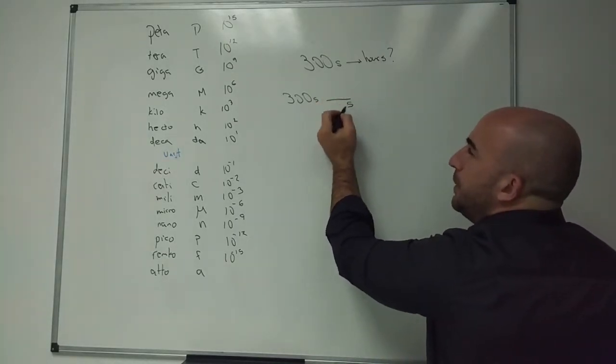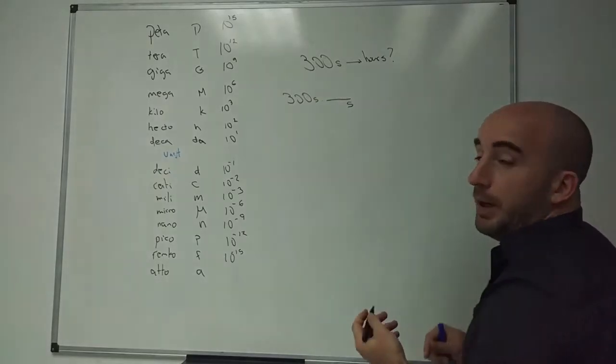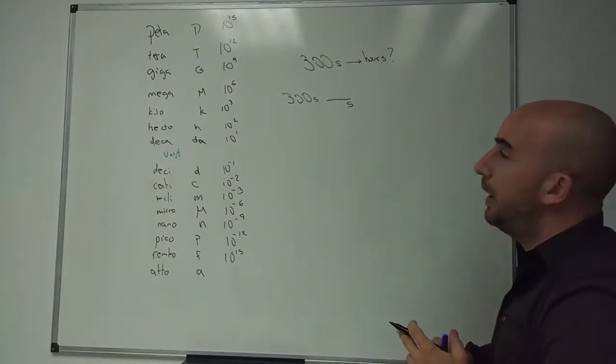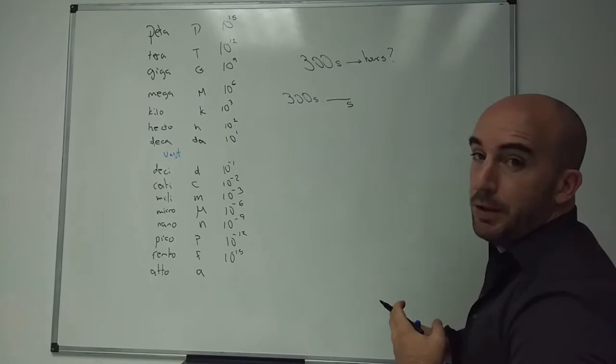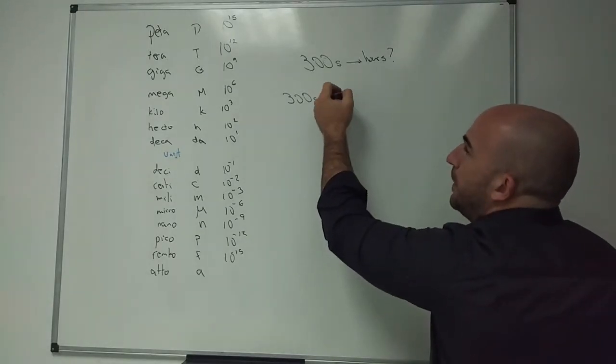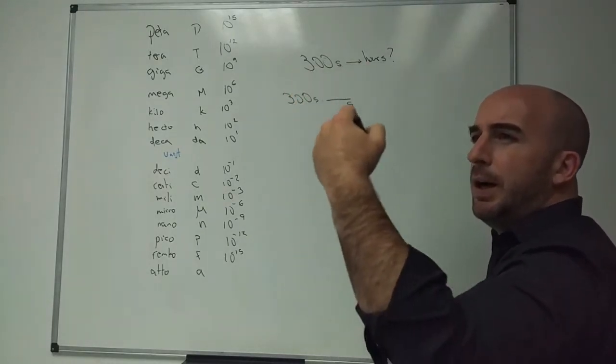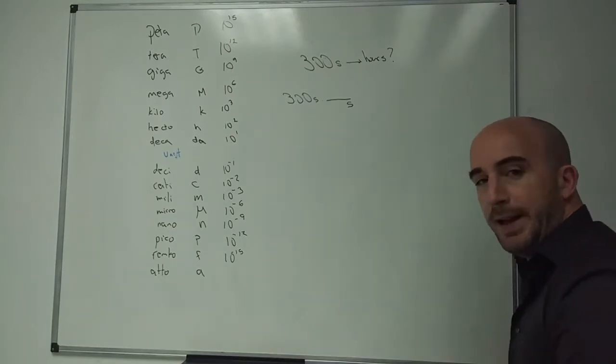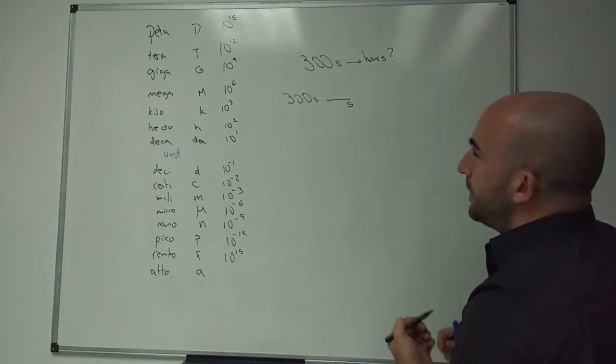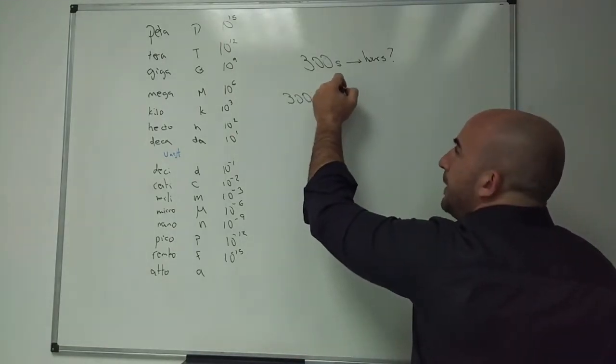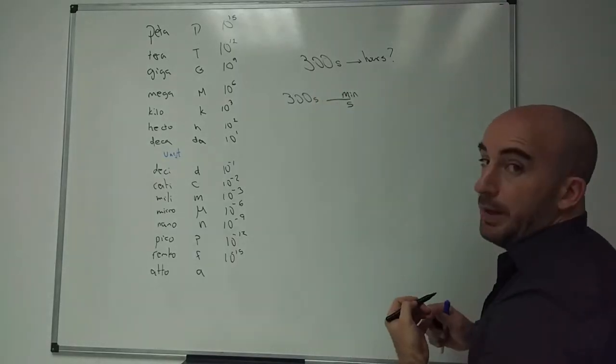That conversion factor should be the following way. At the bottom, you should have the unit you want to take away from your magnitude. At the top, the one that you want to get to on the next step, because you can do it in several steps. So I want to get to minutes now.